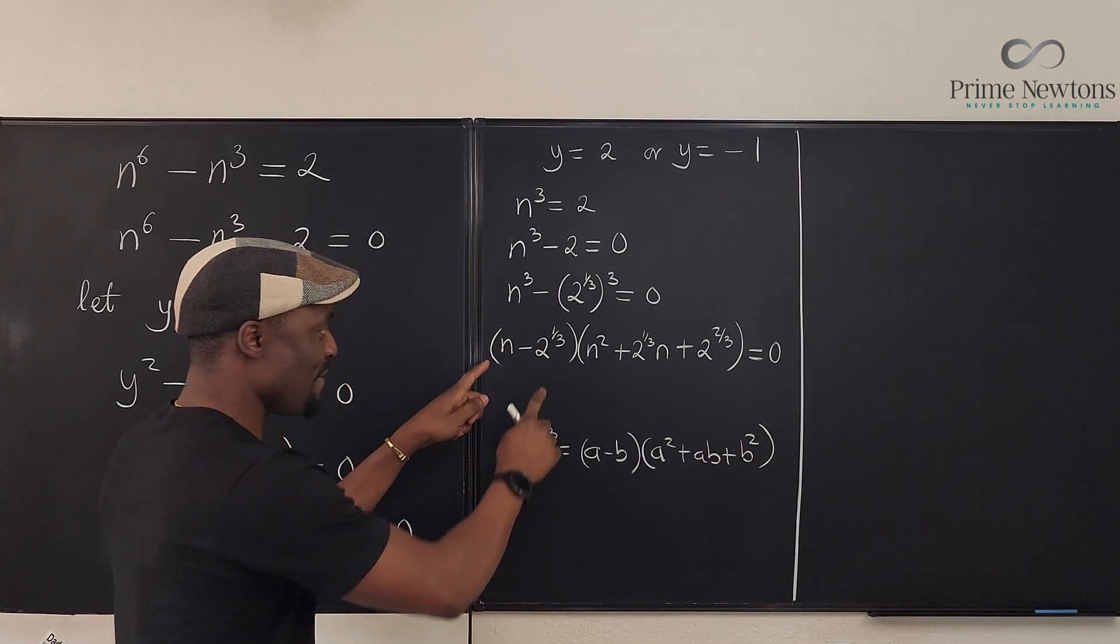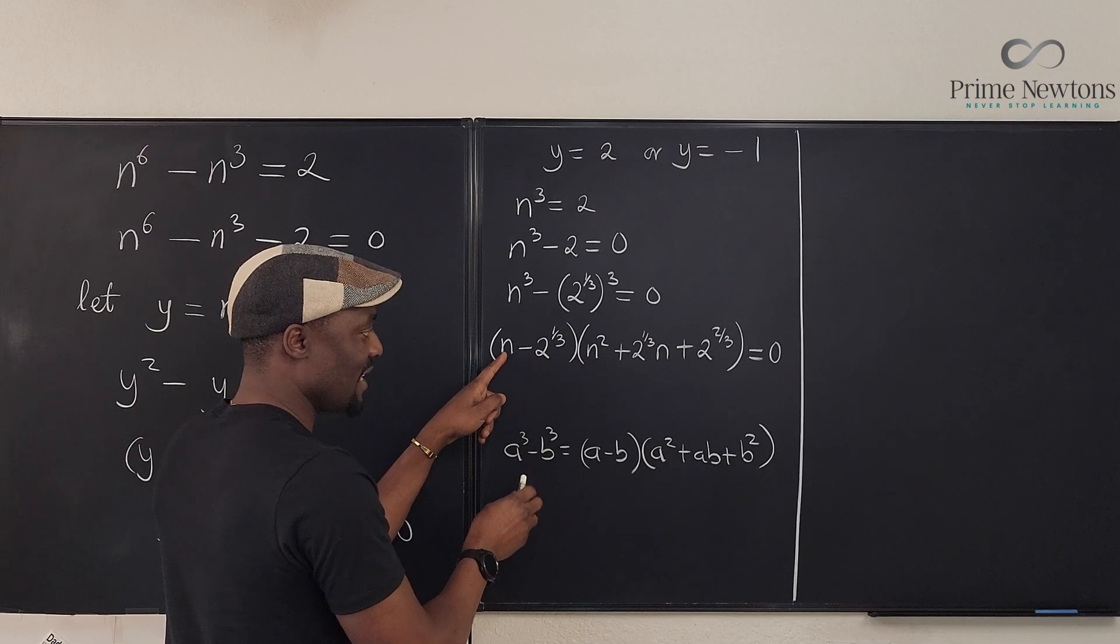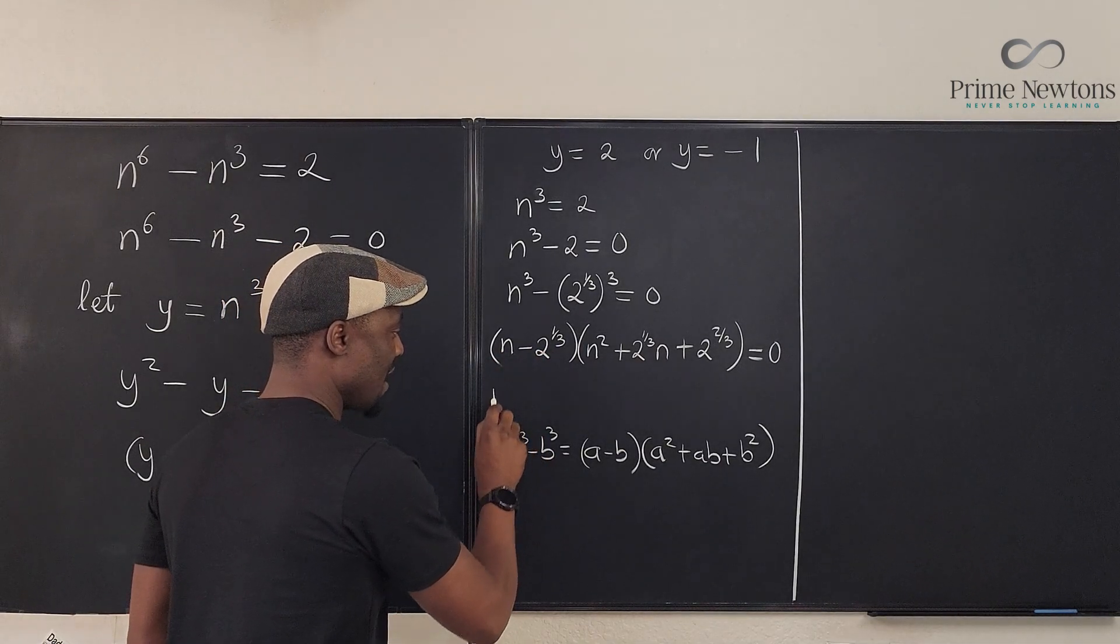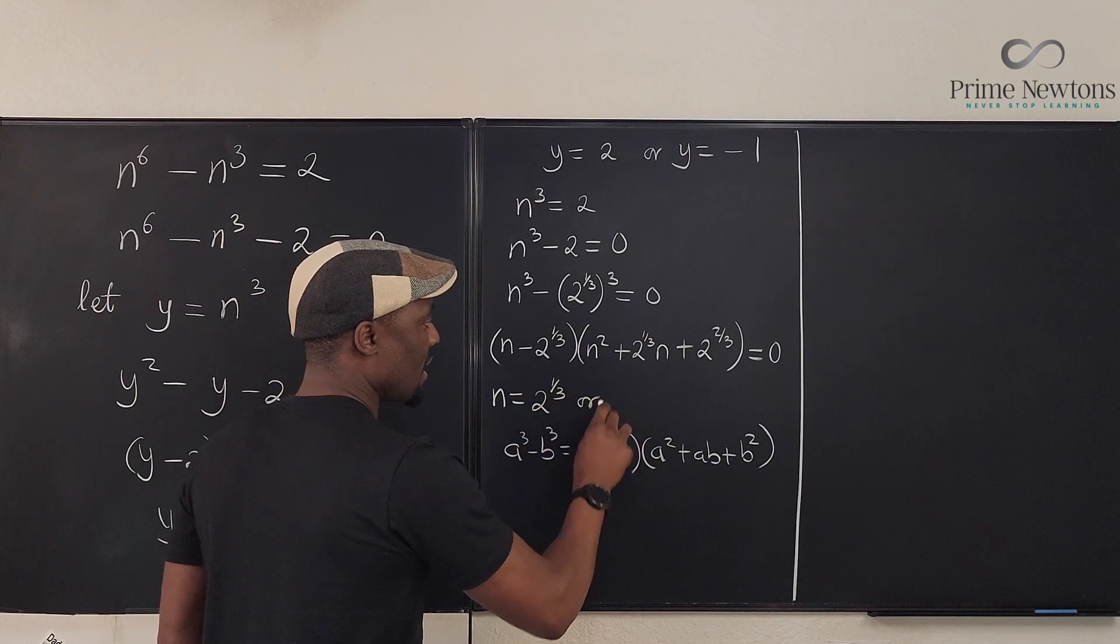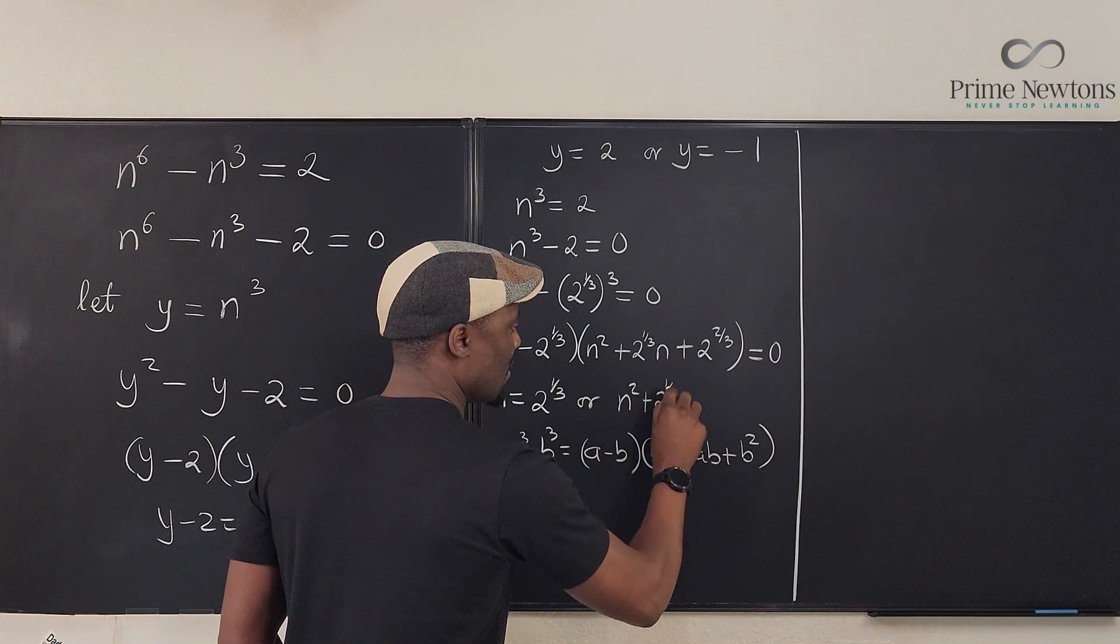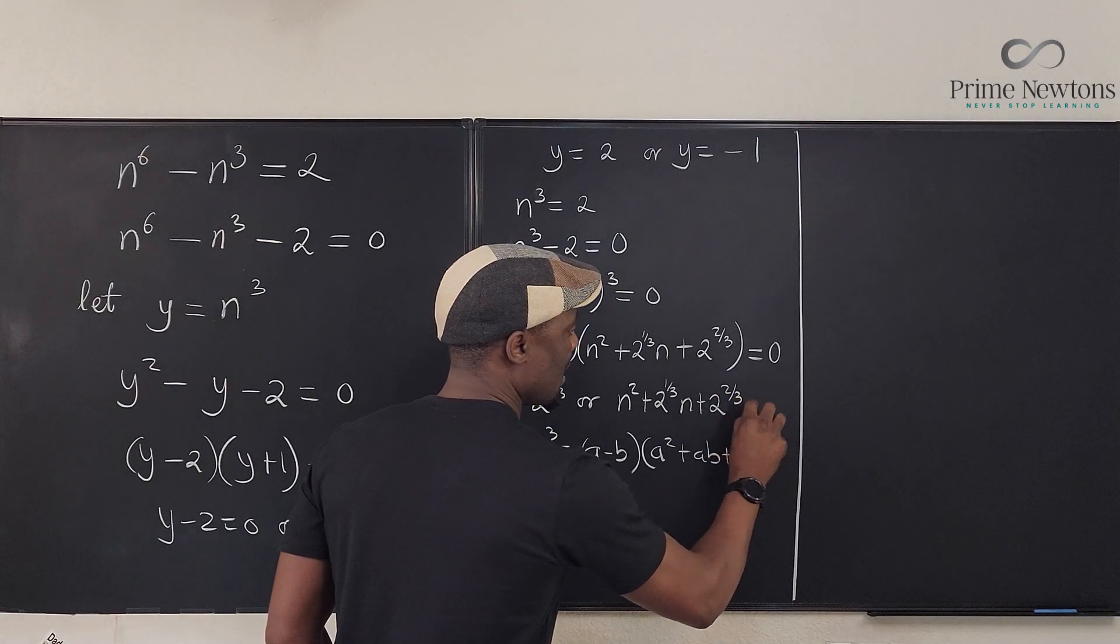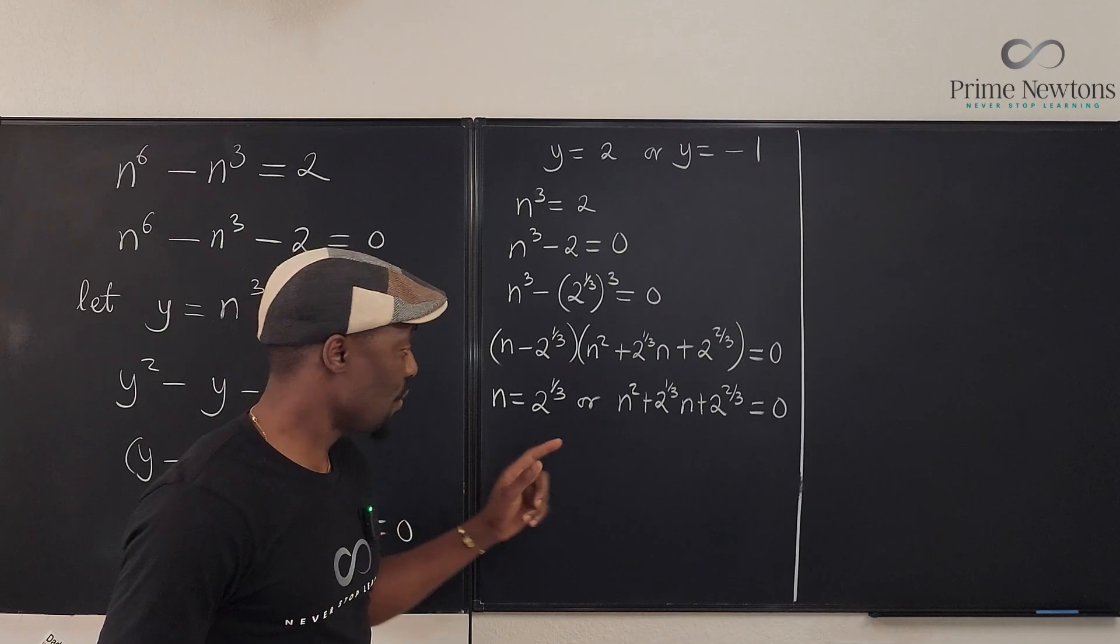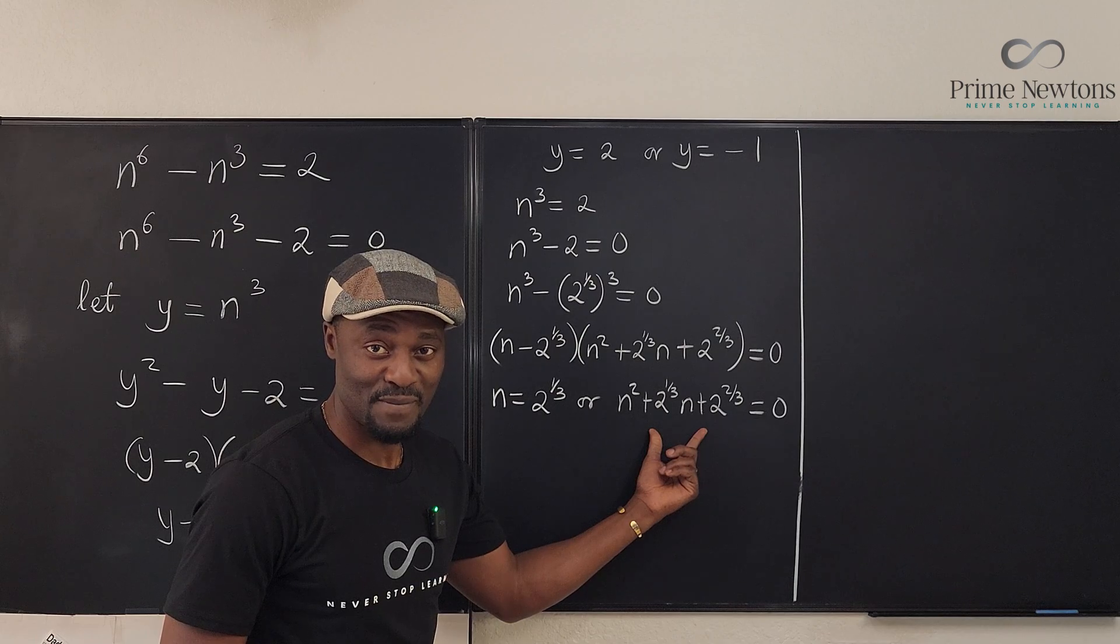So, we have two solutions. And if you make this equal to 0, you can clearly see that it means n will be equal to 2^(1/3). So, we have n = 2^(1/3), or this n^2 + 2^(1/3)n + 2^(2/3) = 0. Let's get rid of this. Clearly, this is a real solution. We just need to investigate if we can get anything real from this one.